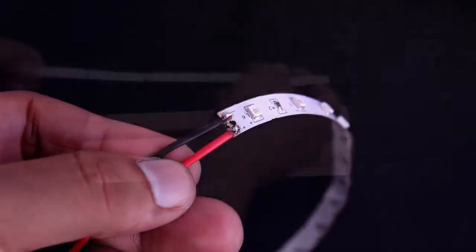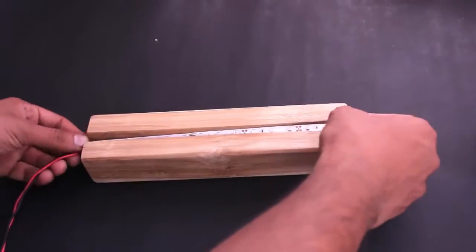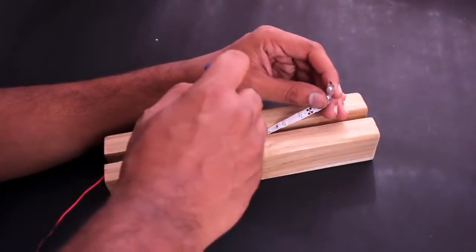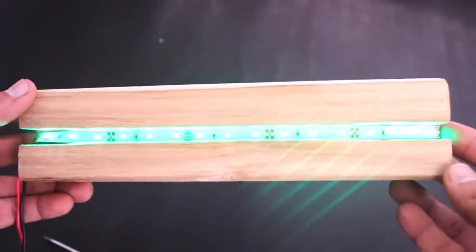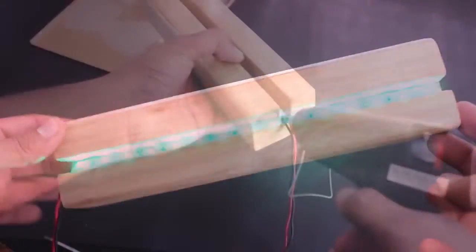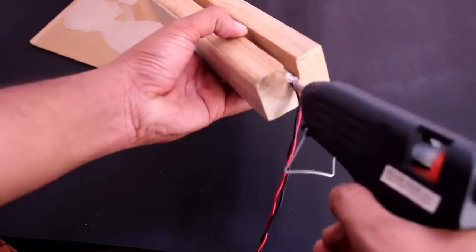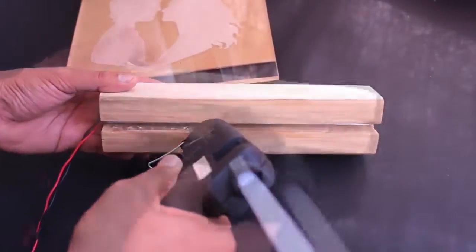Solder the wires and stick it inside the groove. Apply glue for consistency and place the glass inside the groove and press it slightly.